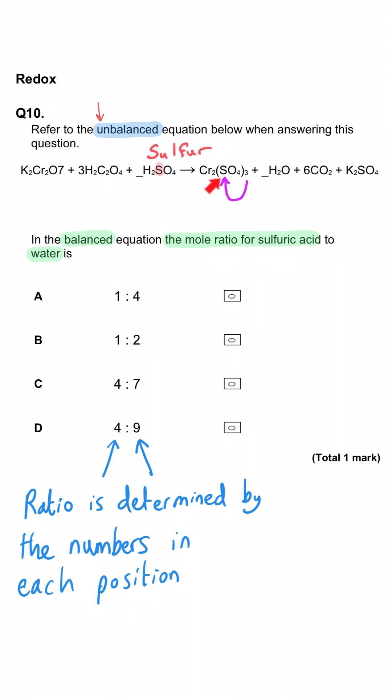In the Cr₂(SO₄)₃, there are three sulfur atoms, and in K₂SO₄ there is one. So since there are four sulfurs on the right-hand side, we need to put a four here.